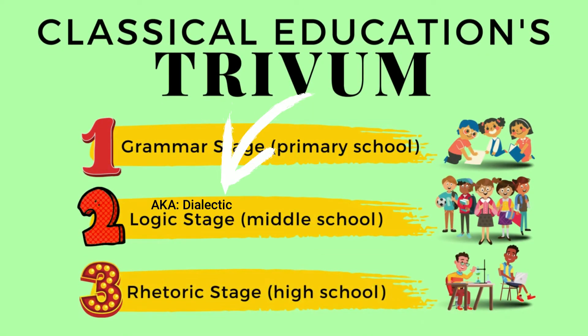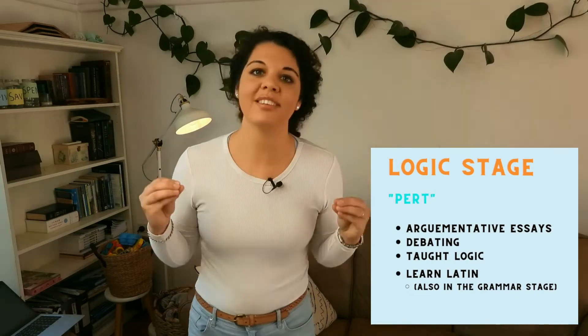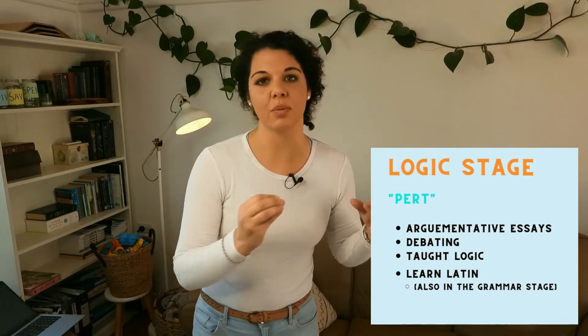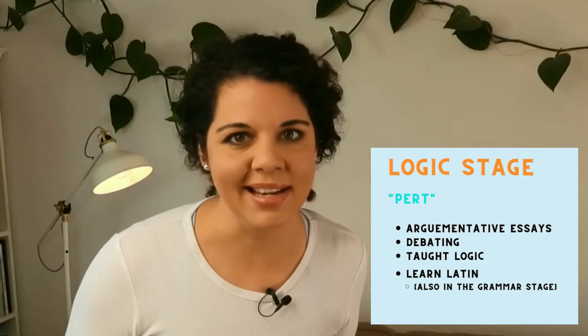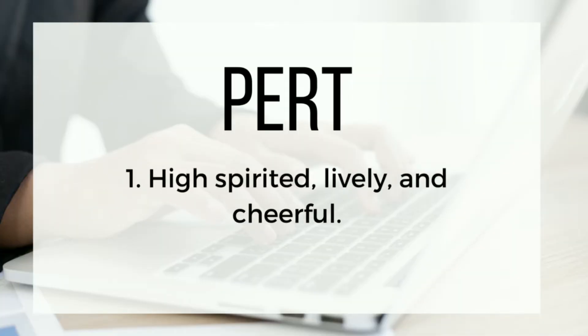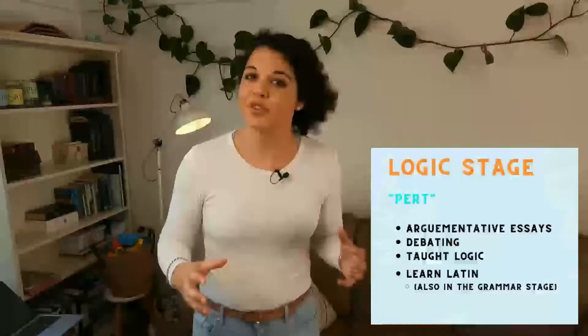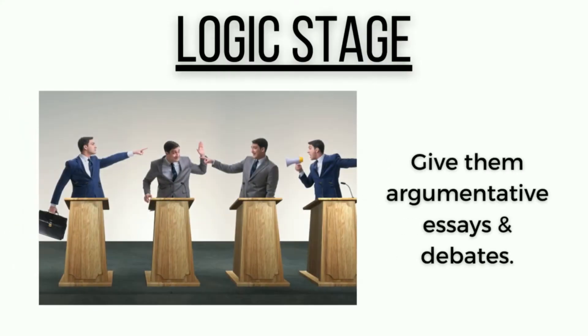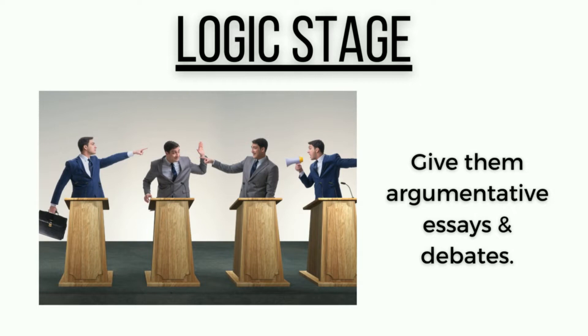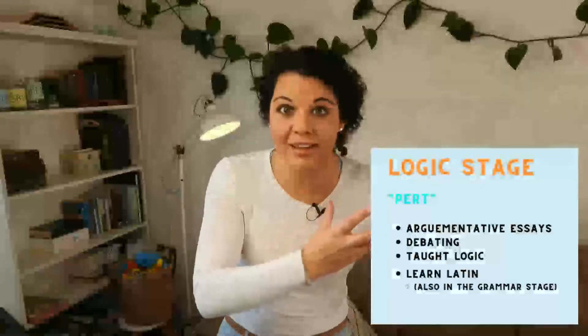Then there is the dialectic stage, taught to middle school aged children. Dorothy Sayers called this the 'pert' age — pert meaning high-spirited, lively, and cheerful, but it can also mean impudently bold or saucy. If you have middle school children you might say that characterizes them pretty well. During this age children are getting to a point where they love to argue and question things, so we work with that: we give them argumentative essays, start them debating, and get them really thinking about the facts they learned in the grammar stage.